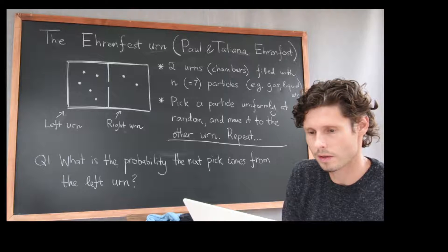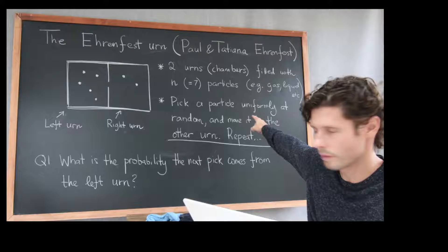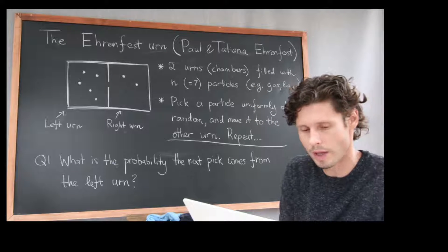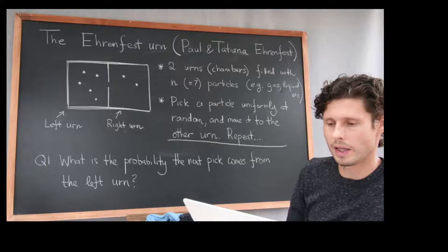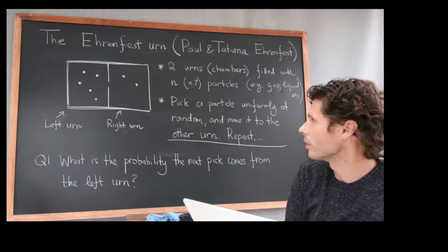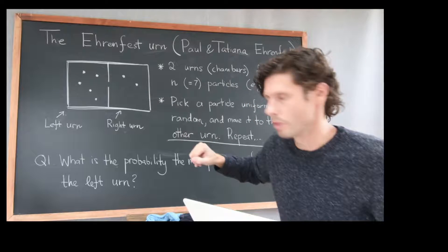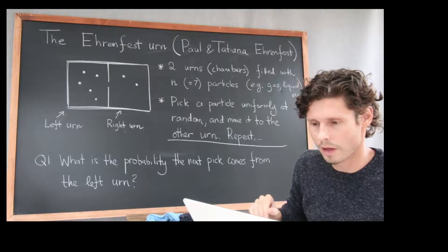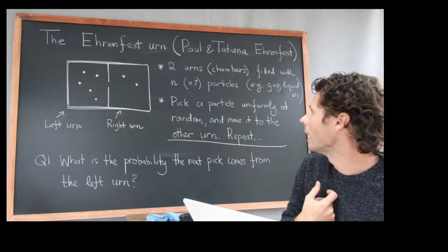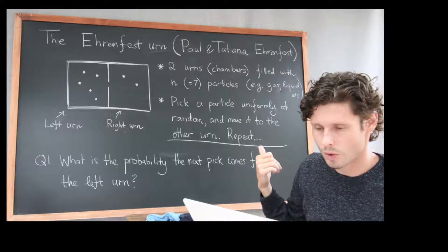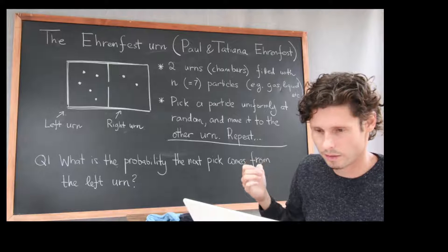Let me read you a very quick word description of how this operates. I'm going to say, pick a particle uniformly at random and move it to the other urn and then repeat. It's a very simple recipe. Just in case there's a little bit of maybe technical verbiage here, uniformly at random, what does that mean? That means that when I pick one of these seven particles, they're all equally likely to be selected. So if there are seven of them, the probability that I pick this particle right here is one over seven, and that goes for all of them.